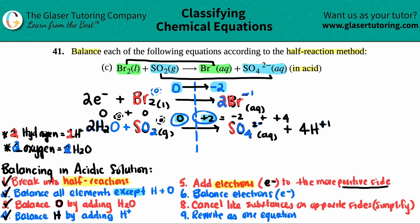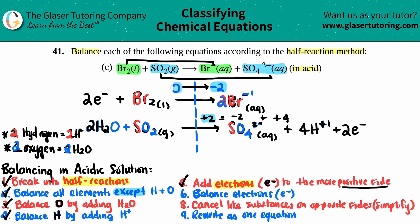The right side is more positive at +2, so I add electrons to the right side. Going from +2 to zero is two steps, so I add two electrons to the right side of the bottom half reaction. Now let's erase the intermediate math to keep things clean.